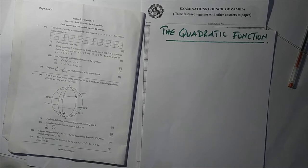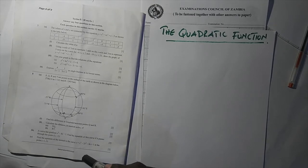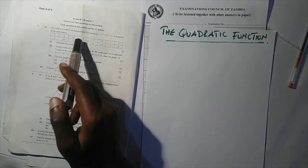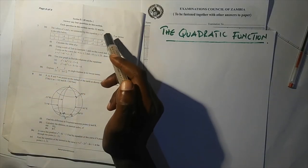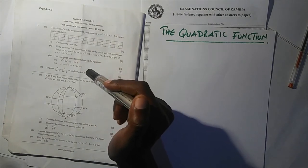Hello friends, this afternoon I want to show you how to answer examination question 7 on the quadratic function. This is a very simple question; I request you to pay attention. Question 7 part a is from the Examination Council of Zambia, year 2020, Paper 2. The values of x and y are connected by the equation y = x³ + 4x² + x − 5, as shown in the table below.